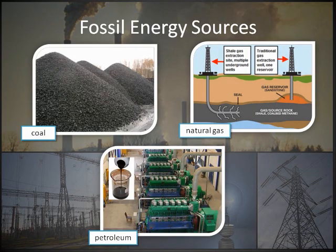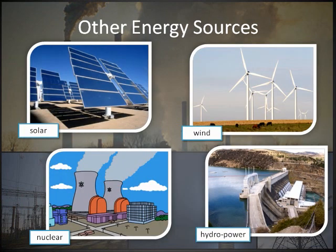These generators can be powered by fossil fuels such as coal, natural gas, and petroleum, or by sources that do not emit air pollutants, like solar, wind, nuclear, or hydropower.